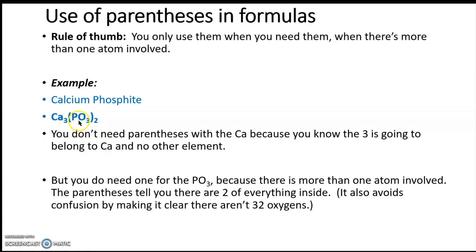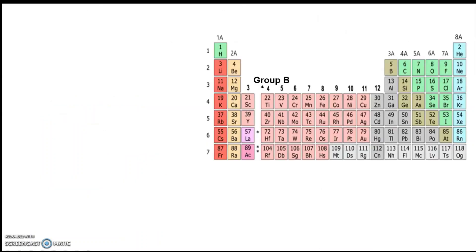There's nobody, nobody is going to confuse that that three belongs to anything other than that calcium. So you can see an example of one where you don't need it. But you do need it for the phosphate because you've got more than one atom. Make absolutely sure that it's understood that that two refers to the phosphorus too. Also, you don't want to make it look like there's 32 oxygens. So that's just a sort of quick and dirty tutorial on the use of parentheses.